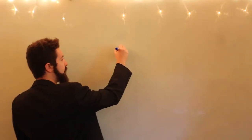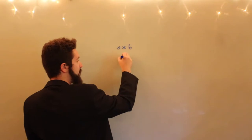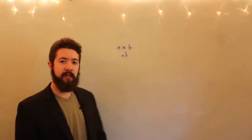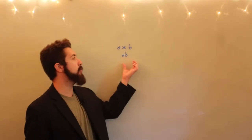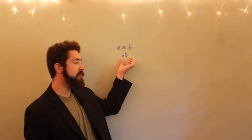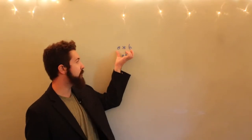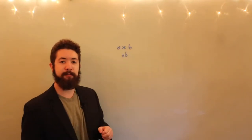We're going to shorten A star B to just AB and talk about it as though it were multiplication. It's just because AB is much easier to write and read than A star B.